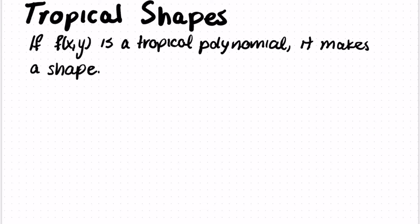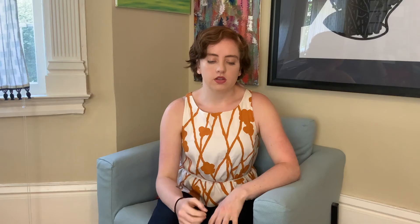So now we're going to be dealing with tropical polynomials. And I'm going to tell you how to make a shape out of a tropical polynomial. So if we have a tropical polynomial f(x,y), it can make a shape. And the points in the shape are the points where the minimum is achieved twice. So what do I mean by that? Let's do an example.